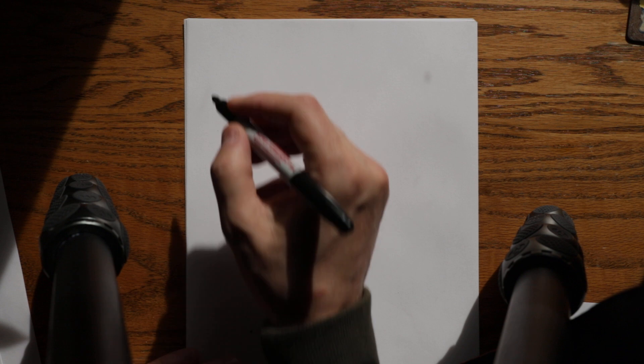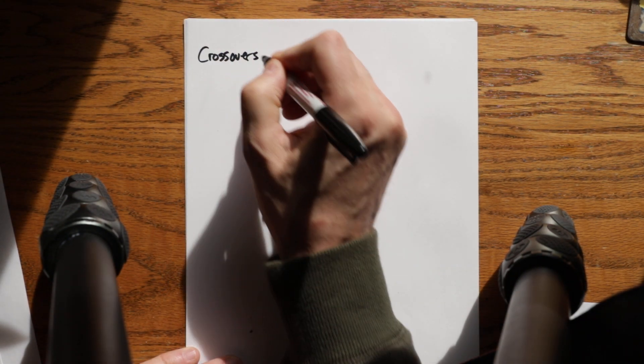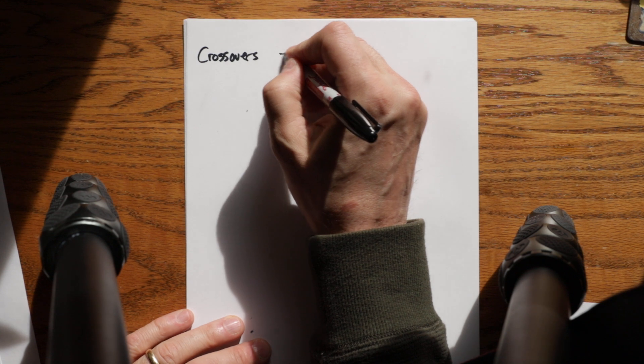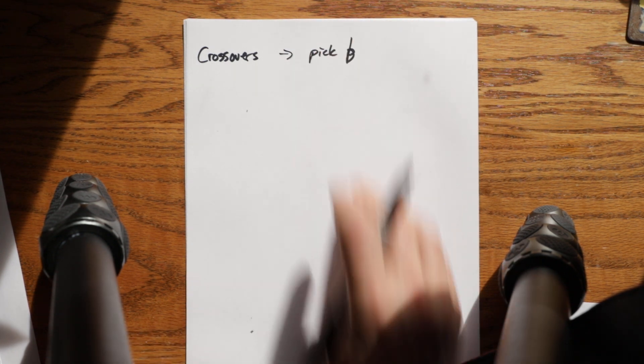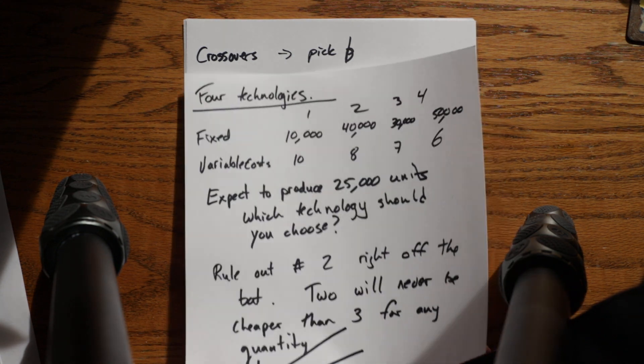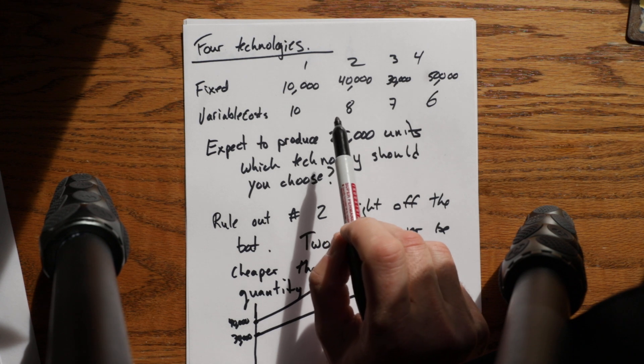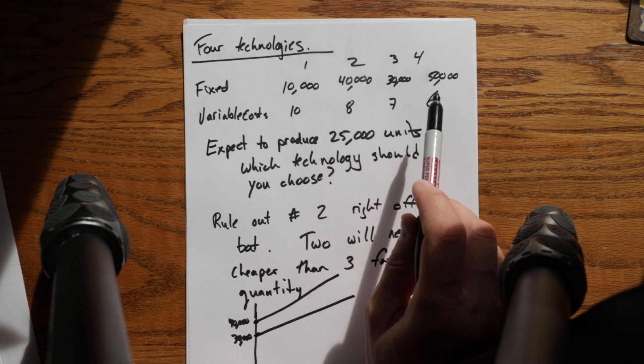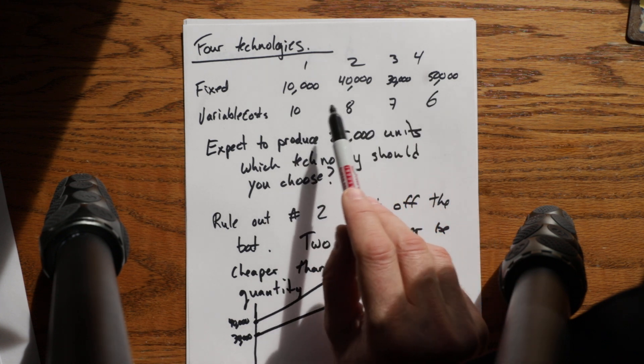So let's then do crossovers. I pick my crossovers based on ascending order of fixed costs. So I have three technologies: one, three, and four. That could mean I have to do three crossover points, but I know that I can pick them in ascending order of fixed costs.